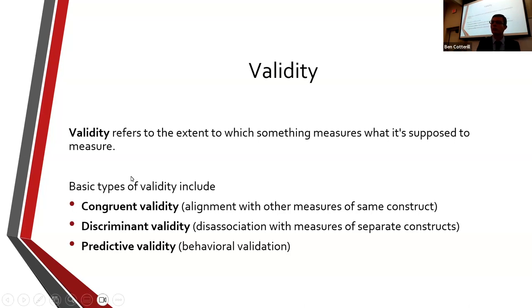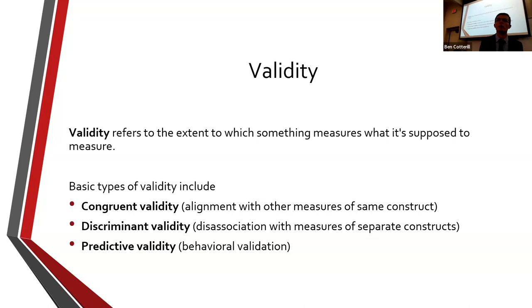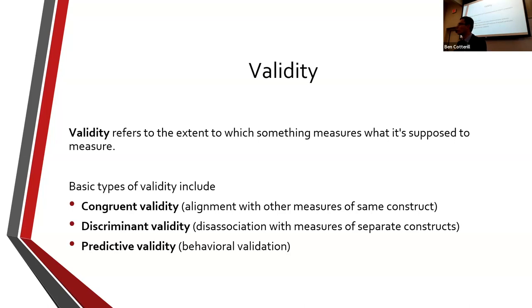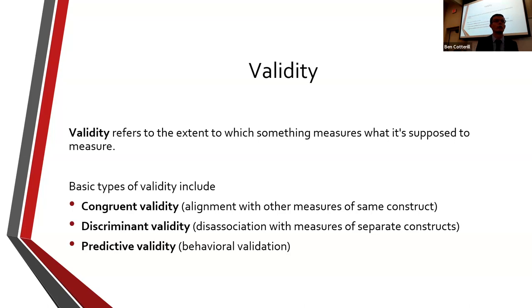Discriminant validity is basically the opposite — the measurement is not related to concepts we know are unrelated to this particular trait. There should be clear disassociation between what I'm intending to measure and an unrelated thing. For example, we know from a number of studies that extraversion and emotional stability have a correlation of about zero — they're completely unrelated. You can be extroverted and emotionally stable or unstable; one has no bearing on the other. So if I've developed a questionnaire for measuring extraversion, the association with emotional stability should be pretty close to zero.